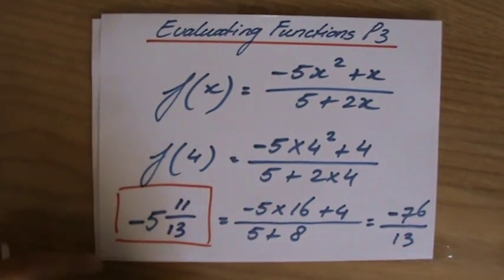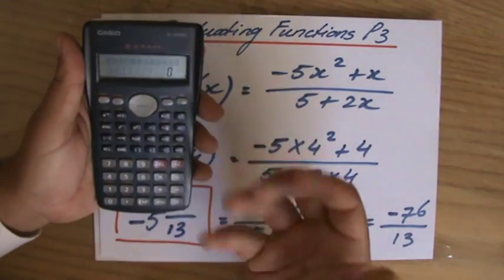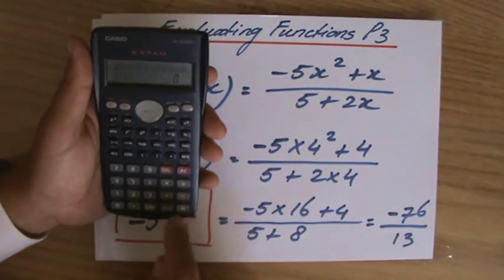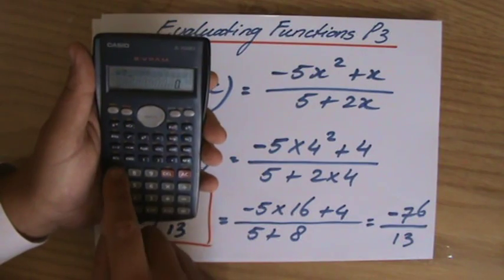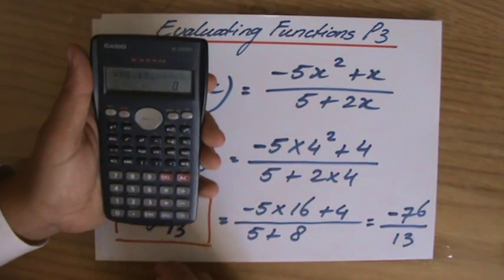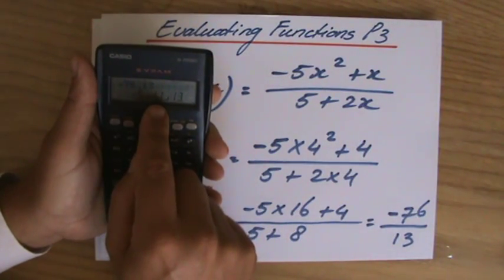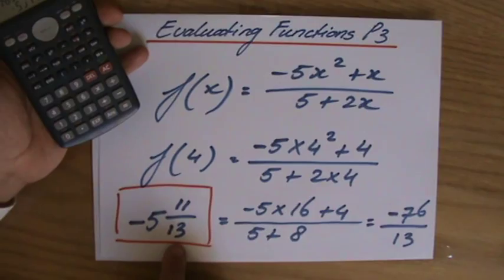Okay. Now, just to show you that that is correct, perhaps you have a better looking calculator than I have, but if you put in the fraction minus 76 over 13, yeah, equals, it tells you minus 5, 11 over 13. Yes, I was actually correct.